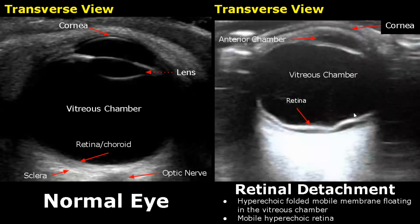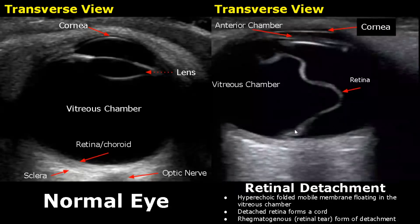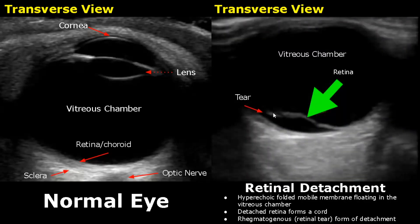In retinal detachment, the retina is separated — we will see a hyperechoic folded membrane floating in the vitreous chamber. The detached retina can form a cord attached from one end, moving around in the vitreous chamber. A retinal detachment in which there is a hole or tear in the retina is called rhegmatogenous detachment. A tear can be seen in the retina here, confirming that it is a rhegmatogenous detachment.